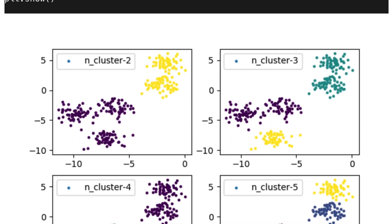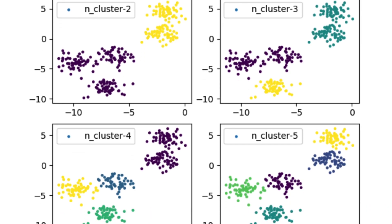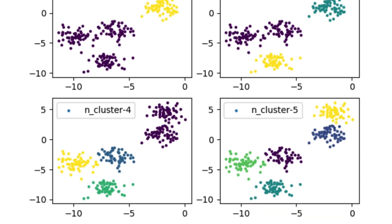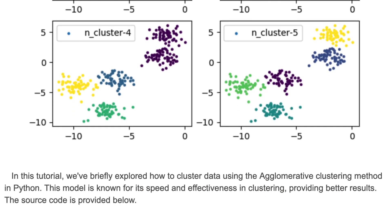This is the result: in the first graph we have two clusters, in the second one three clusters with different colors, then four and five clusters. That's it for this tutorial — we have briefly explored how to cluster data using the agglomerative clustering method in Python. This model is known for its speed and effectiveness in clustering, providing better results.